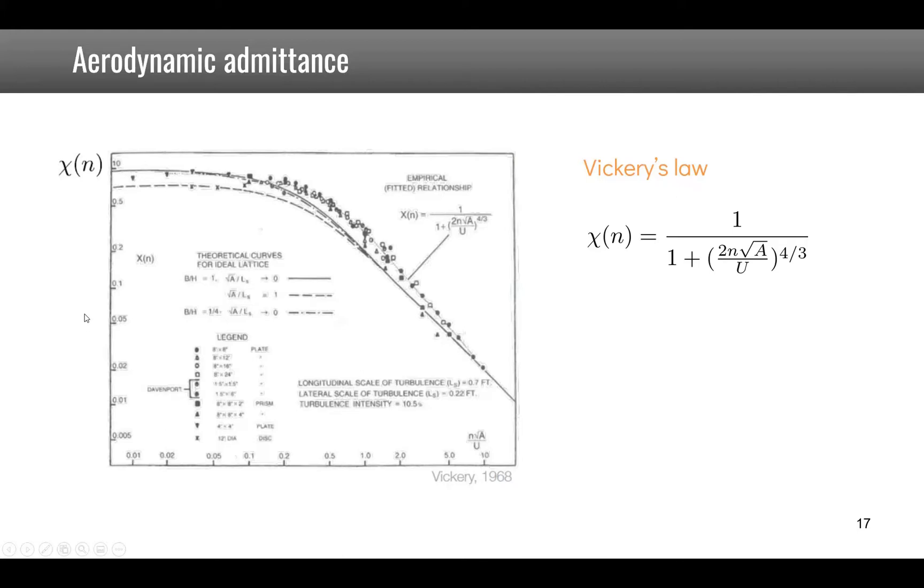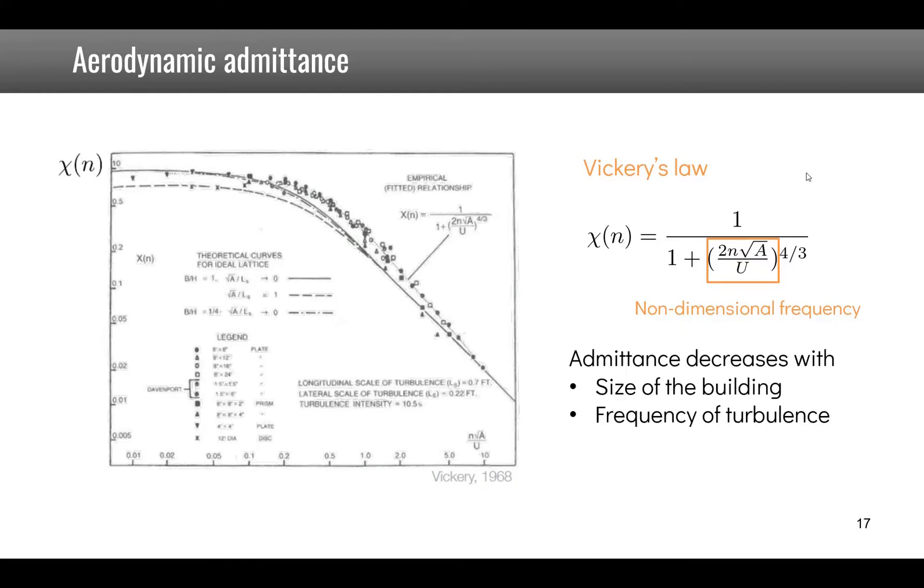This aerodynamic admittance is a function of the frequency and will decrease with the frequency of the turbulence. Vickery's law gives this admittance as a function of a non-dimensional frequency. This is very similar to what we saw with the turbulence model, but here the non-dimensional frequency is a function of the frequency, of the area of the object on which the wind is blowing, and the mean wind velocity. Physically, the admittance decreases when the size of the building is large or when the frequency of the turbulence is large, and increases with the mean wind velocity.